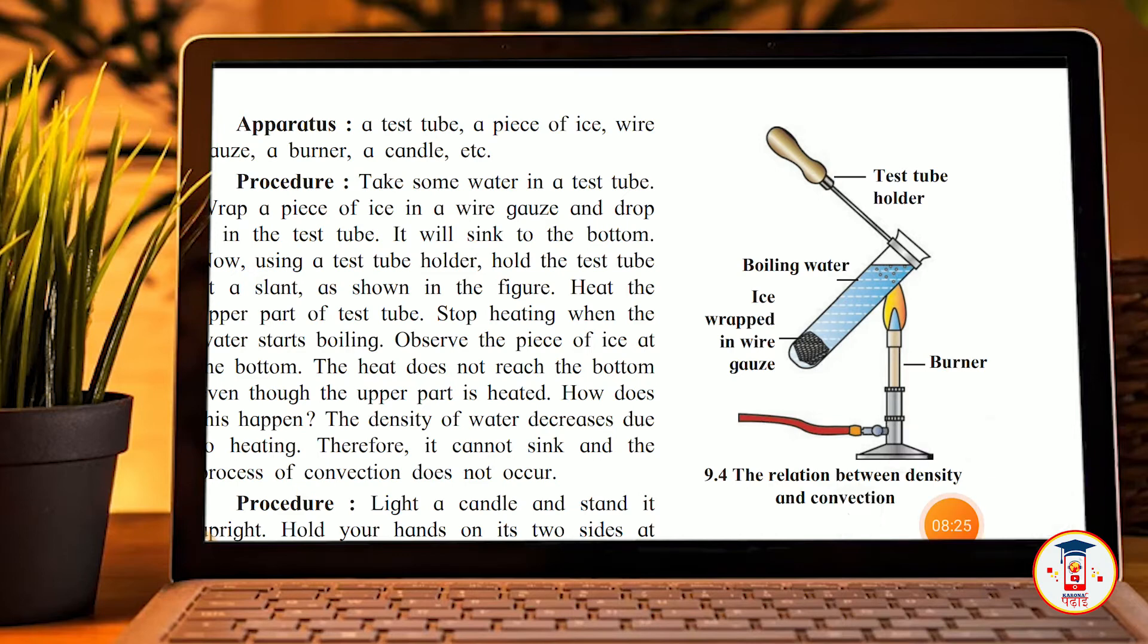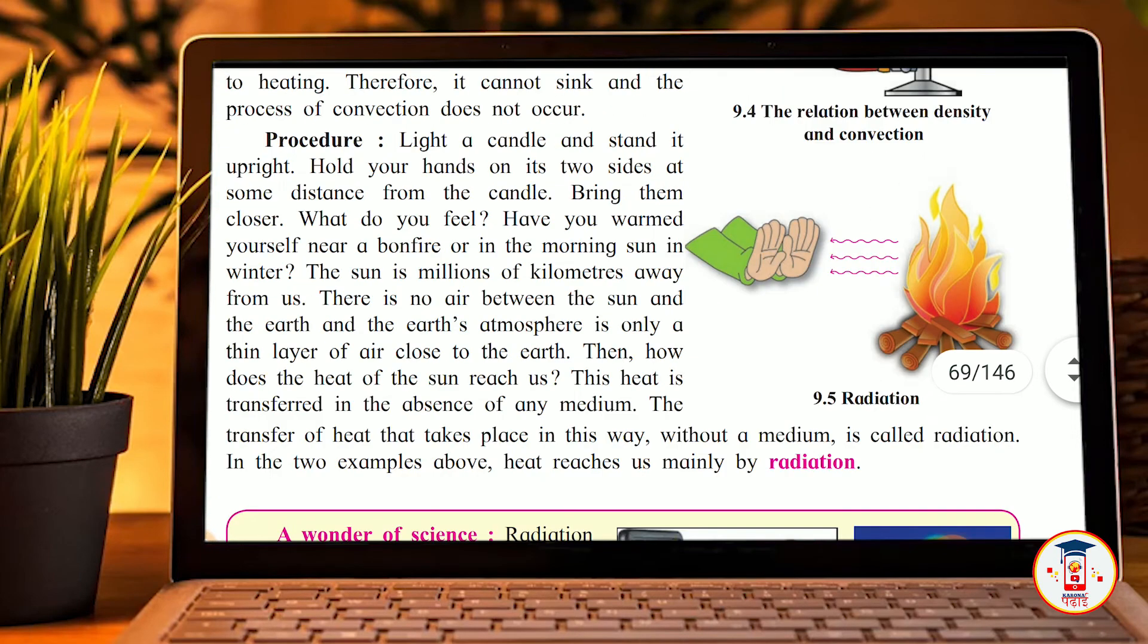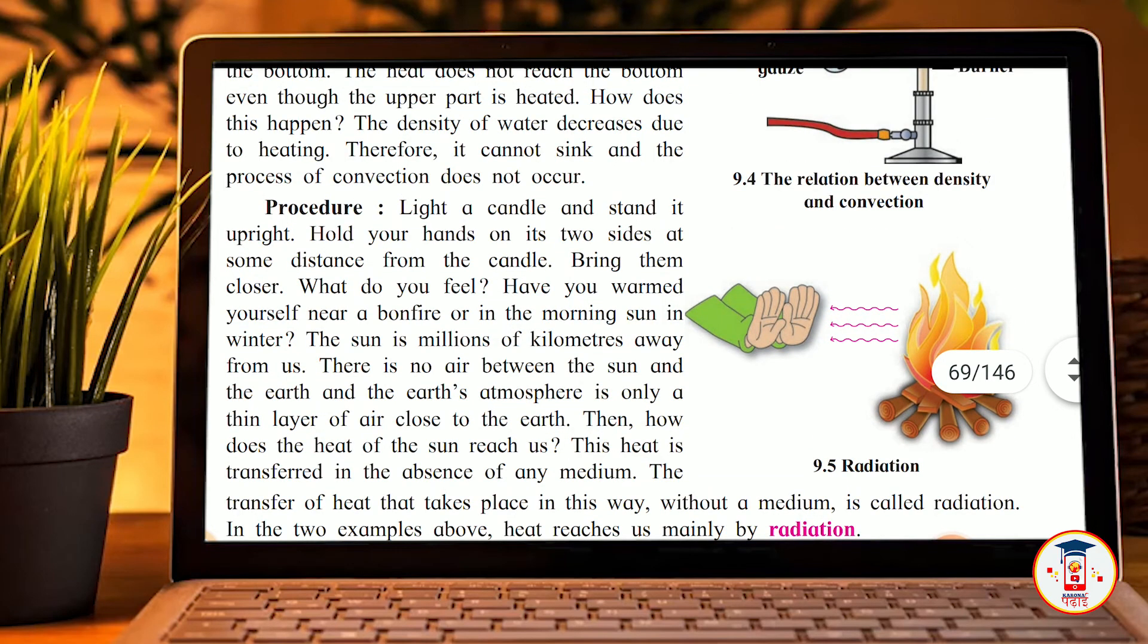First, we need to see what happens when we heat from the top. If we heat from the top, the heat doesn't transfer downward easily. But if we warm from the bottom, the heat rises to the top. Now we are heating from the top, so the heat stays at the top and doesn't reach the ice wrapped in wire at the bottom. Now you will understand the relationship of this activity and convection.